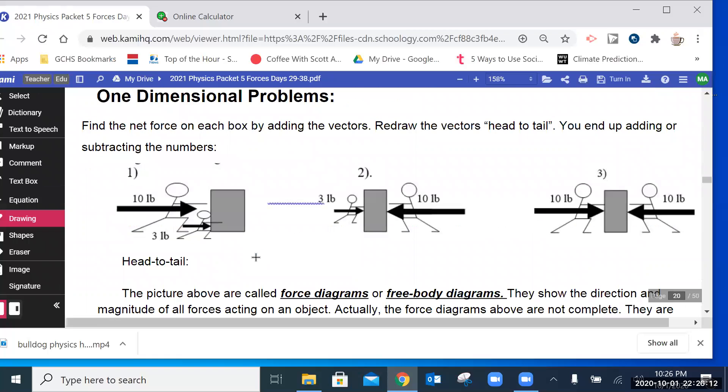One-dimensional problems. Find the net force on each box by adding the vectors. Redraw the vectors head to tail. You may end up adding or subtracting the numbers. Okay, remember vectors are things that have both direction and magnitude. In other words, direction and size. We talked about velocity having both size and direction. The size being the speed and the direction being the compass direction, or left, right, up, down.